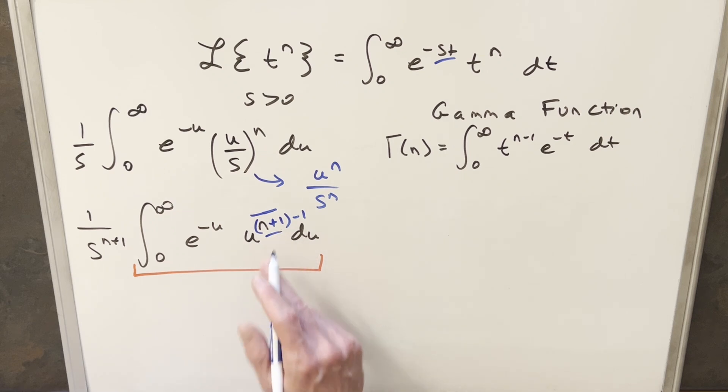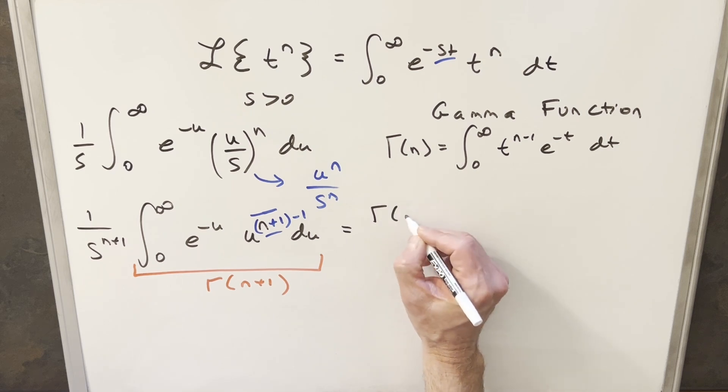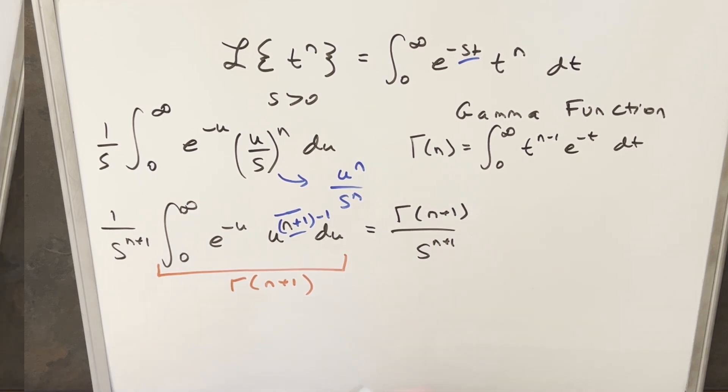Now our input is n plus 1. So noticing with this formula, this whole thing becomes just the gamma of n. Well, we can do the same thing here. This becomes the gamma of just this exponent minus 1, so it's going to be the gamma of n plus 1. And just like that, we're at our formula, we can write this as gamma of n plus 1 over s to the n plus 1.